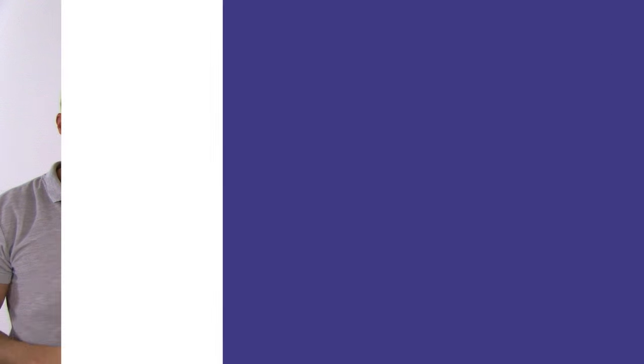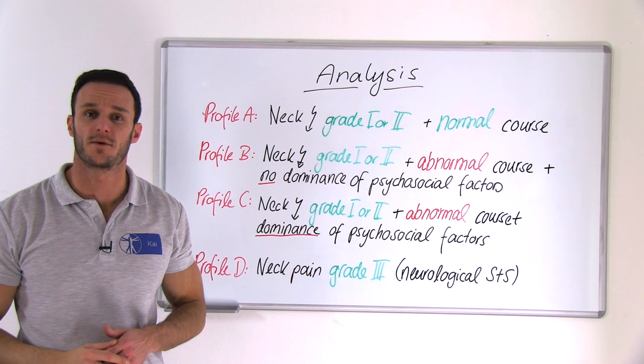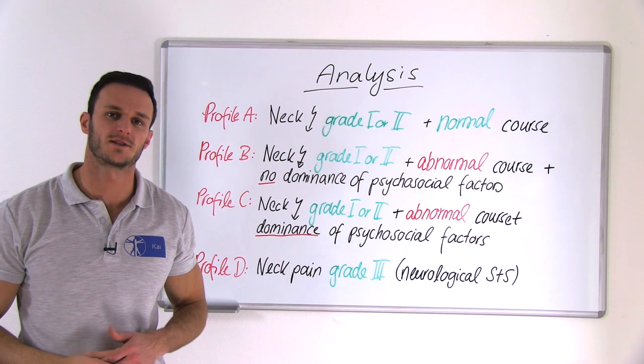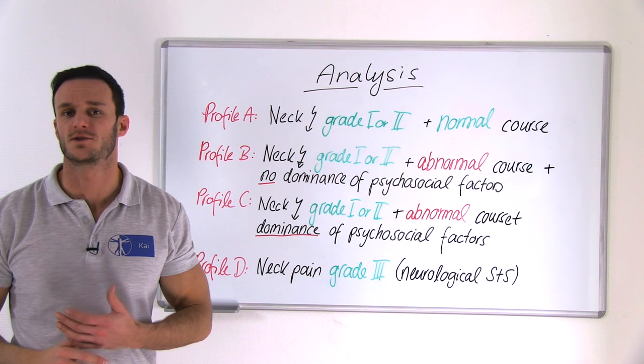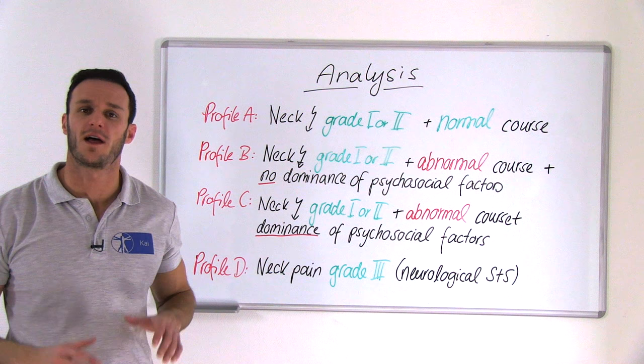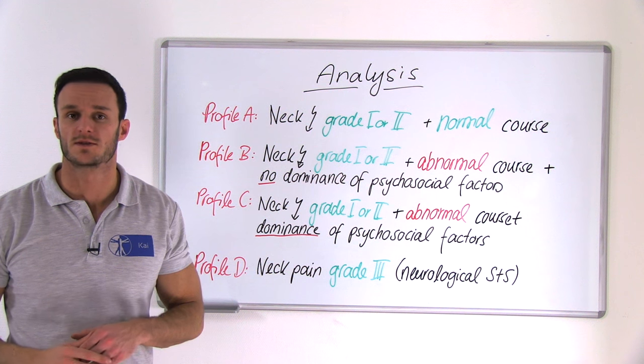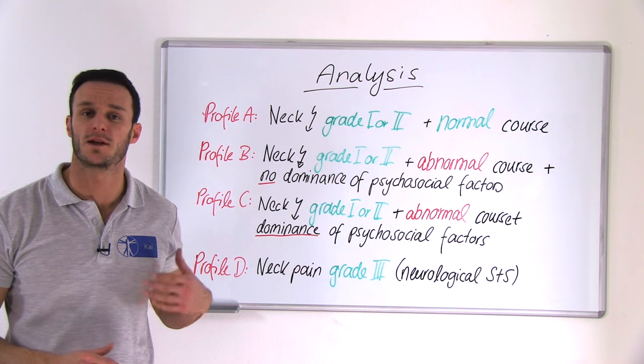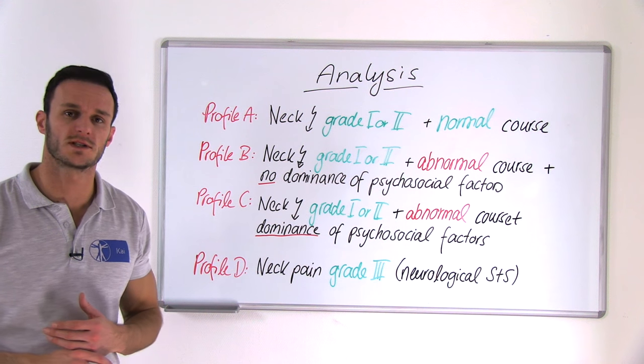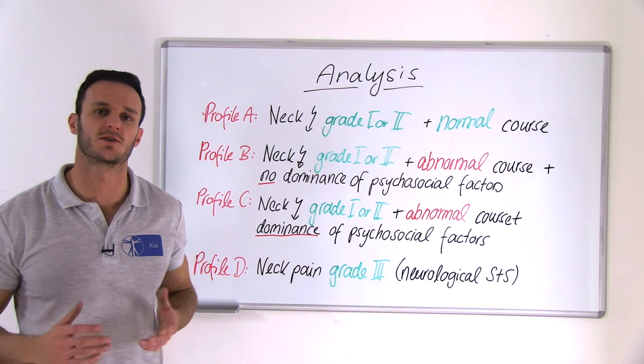Based on your answers to those five questions, you will be able to categorize your patient into four different treatment profiles. Profile A is neck pain grade 1 or 2 with a normal cause. Profile B is neck pain grade 1 or 2 with an abnormal cause and without the dominance of psychosocial factors.